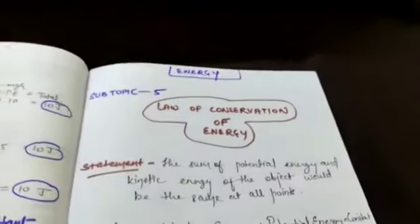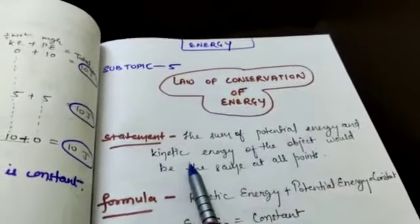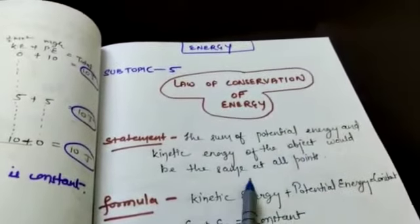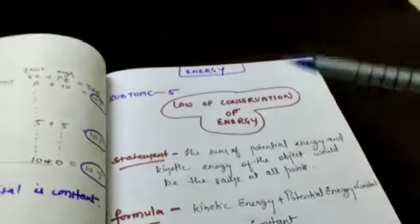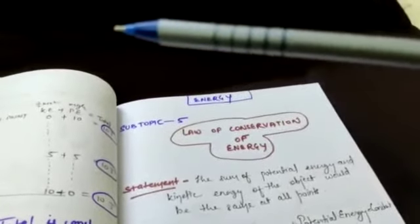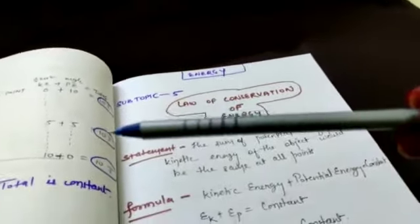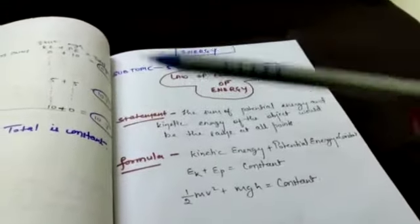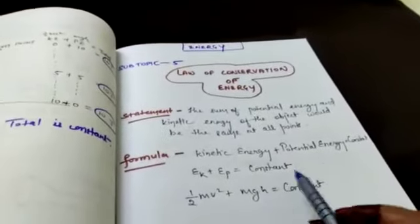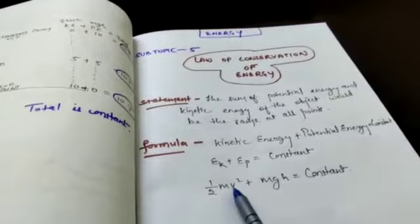Then next is subtopic number 5, law of conservation of energy. Statement is the sum of potential energy and kinetic energy of the object would be same at all places. That means kinetic energy plus potential energy is constant. So at all places sum of potential and kinetic energy is constant. EK is half mv square, EP is mgh and this one is constant.